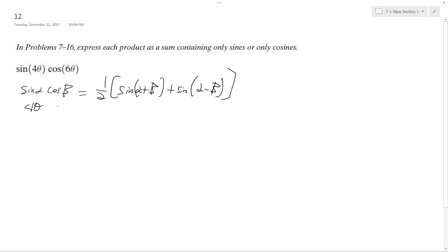And beta is going to be 6θ. So what I'm going to get is one half of sine(4θ + 6θ) plus sine(4θ - 6θ).